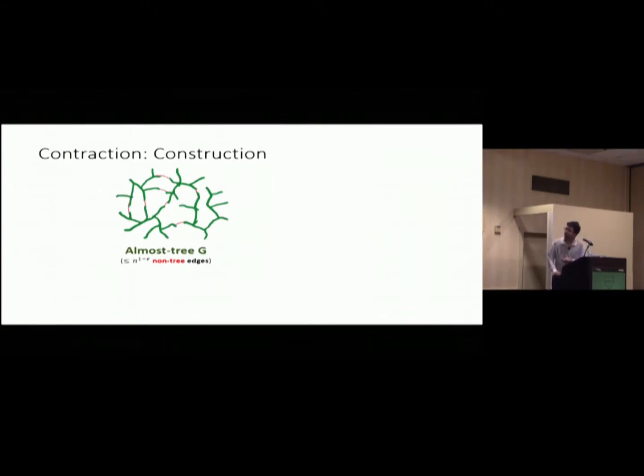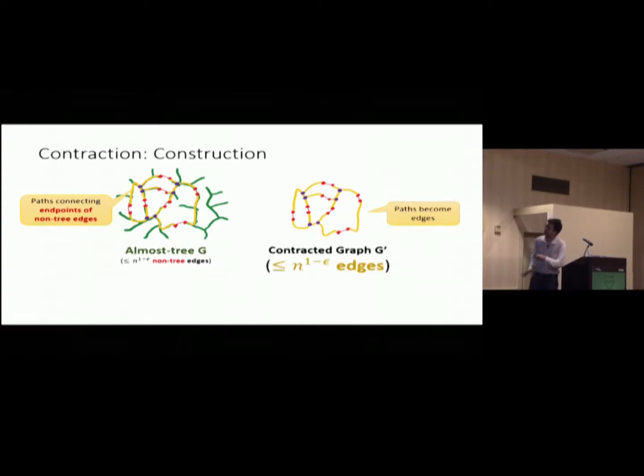So, suppose you have almost tree that looks like this. So, you have the green edge as the tree. And there are some non-tree red edges. And then, you can define some kind of graph. That is basically the path that connects the red dots. Yeah. And it kind of looks like this. And, once you contract each path here to become an edge. Then, you can prove that this graph that connects the red dots, which is endpoint of non-tree edges. This graph will have the number of edges proportional to the number of red dots. And so, there are not too many edges.